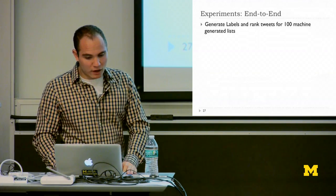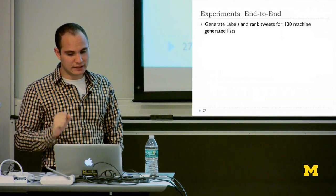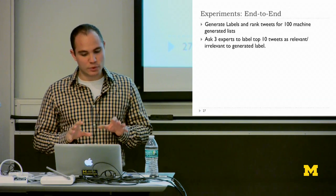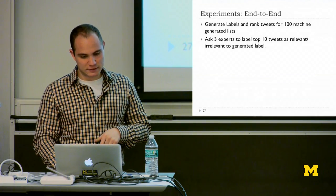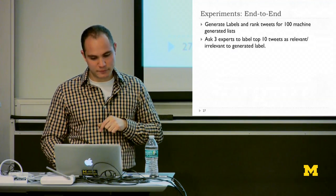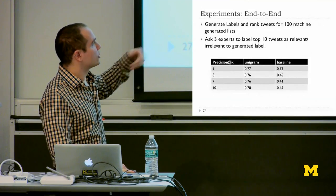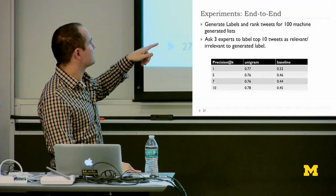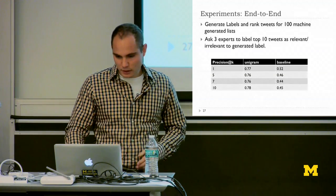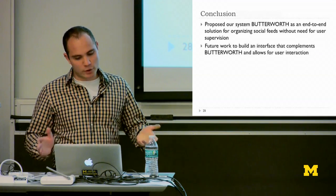In our final end-to-end experiment, we take a user's ego network, partition it, automatically create lists and labels for 100 lists, and ask three experts to label the top 10 tweets as relevant or irrelevant for each machine-generated list with a machine-generated label. For precision at 10, the unigram method — which was best in the previous experiment — achieves 78% precision, compared to the reverse chronological order baseline of 45%. The Butterworth system provides an end-to-end solution for organizing social feeds by topic without requiring user supervision.